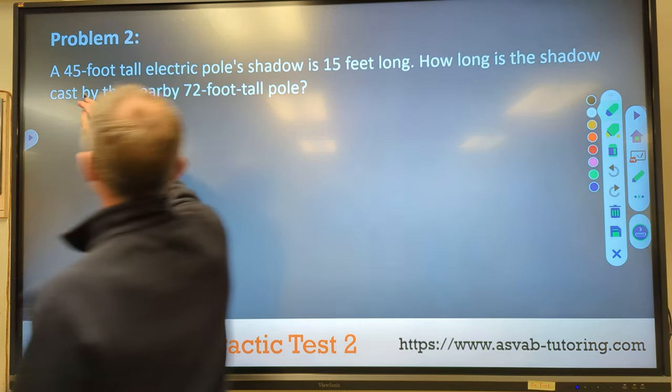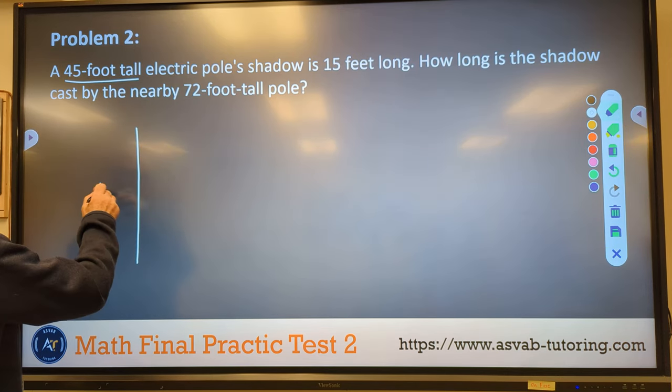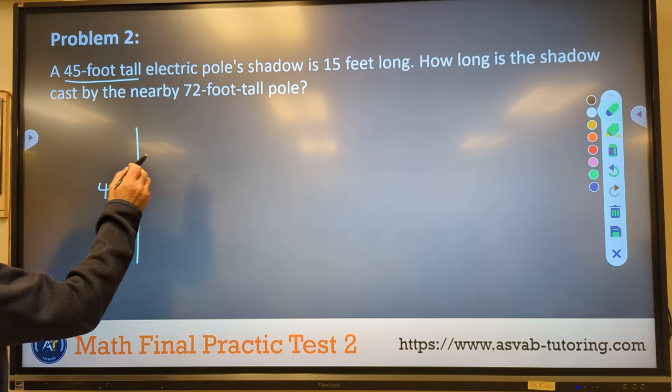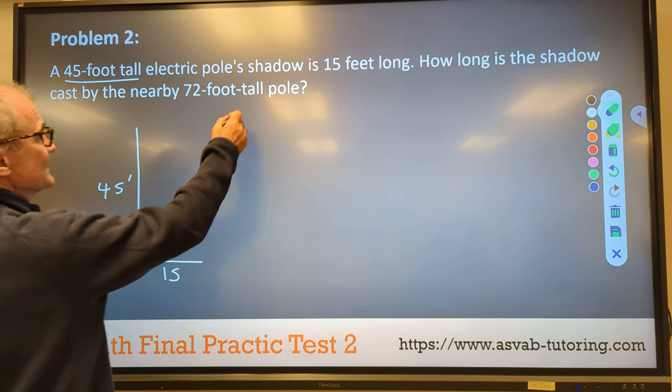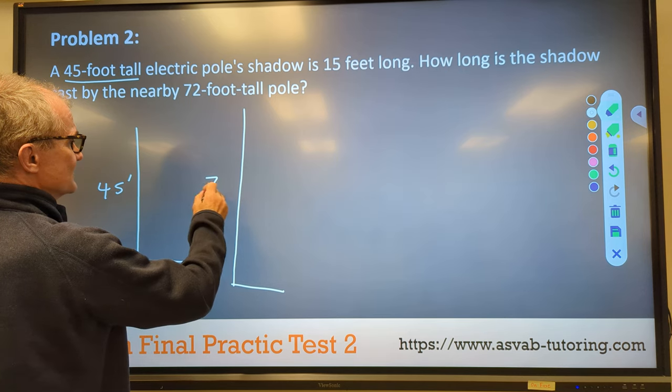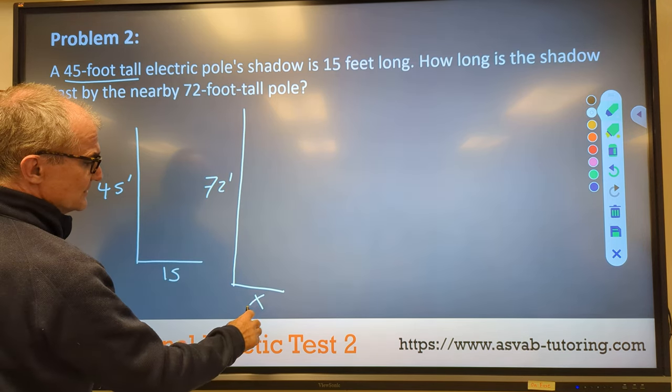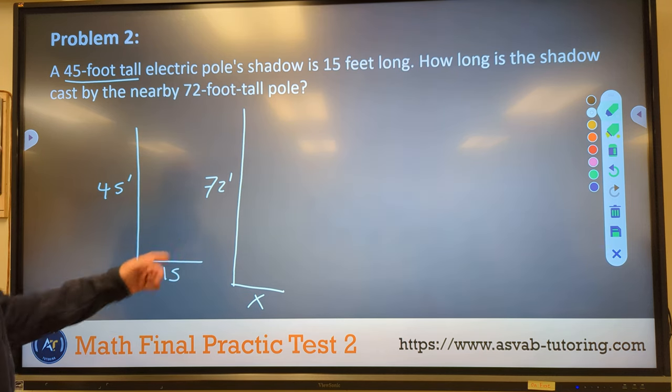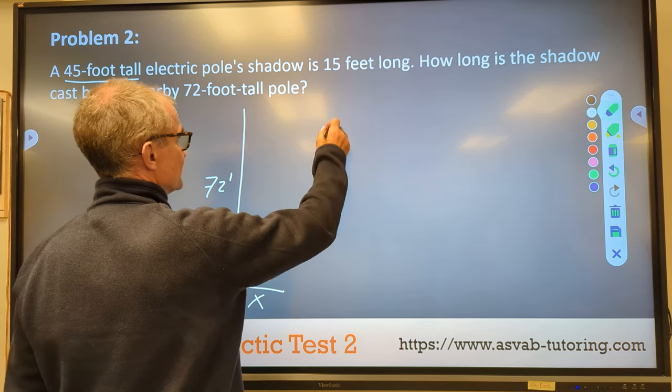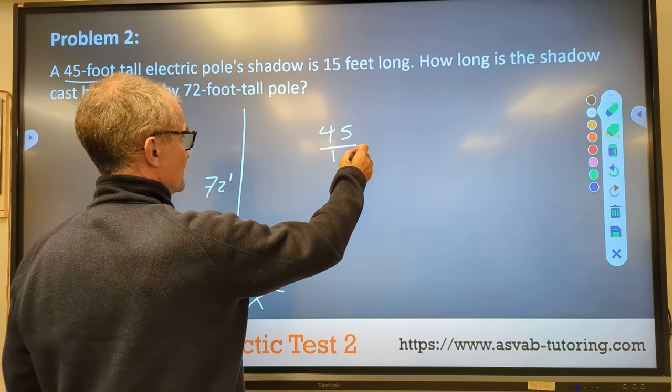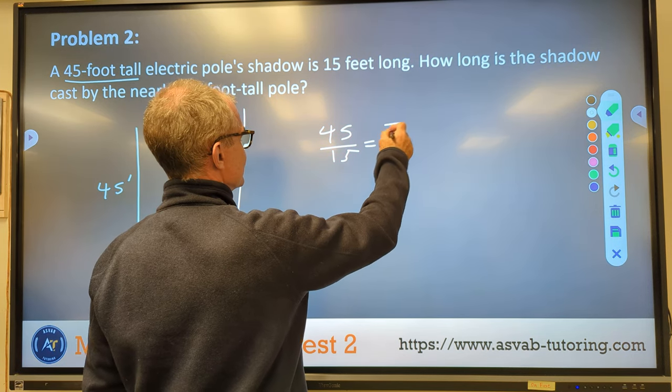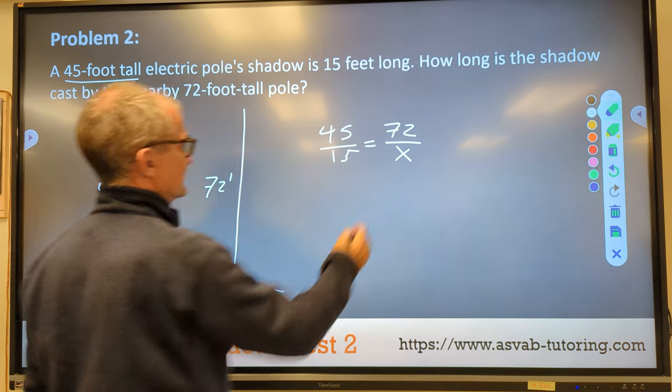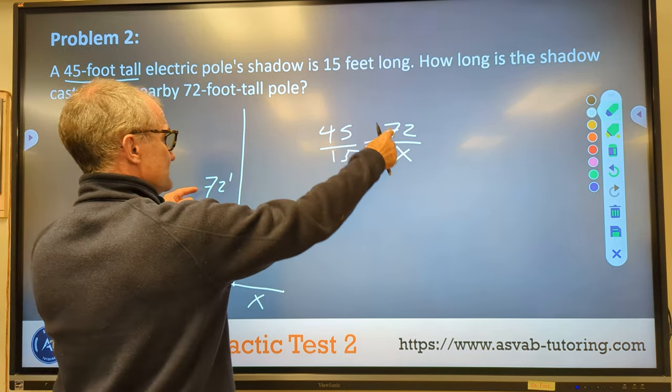Problem number two, a 45 foot tall electric pole casts a shadow 15 feet long. How long is the shadow cast by a nearby 72 foot pole? So I have another pole that's 72 foot long. When you don't know what it is, that means that's x. So these are going to form similar triangles. Ratio of sides are going to be the same. So 45 is to 15, pole to shadow, pole to shadow is equal to 72 over x.